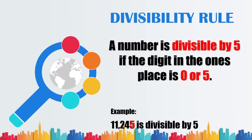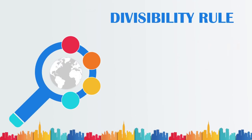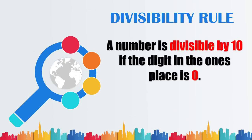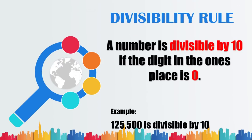A number is divisible by 10 if the digit in the 1's place is 0. Example: 125,500 is divisible by 10, since the 1's place of the number is 0.